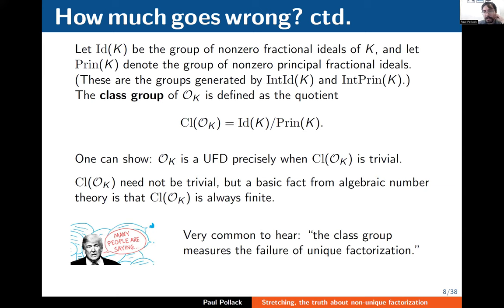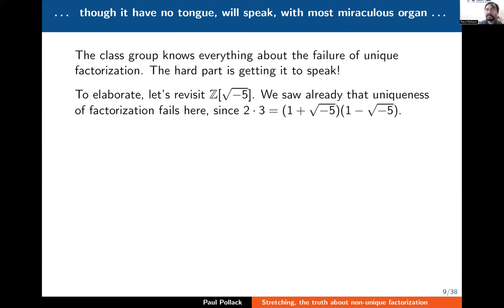Another beautiful and important fact from algebraic number theory is that this quotient is always finite. That's comforting — if you have something finite, you can point to its size and say that's my measure of non-unique factorization. It's very common to hear in first courses on algebraic number theory that the class group measures the failure of unique factorization. And it's true — but that's not what I want to talk about.